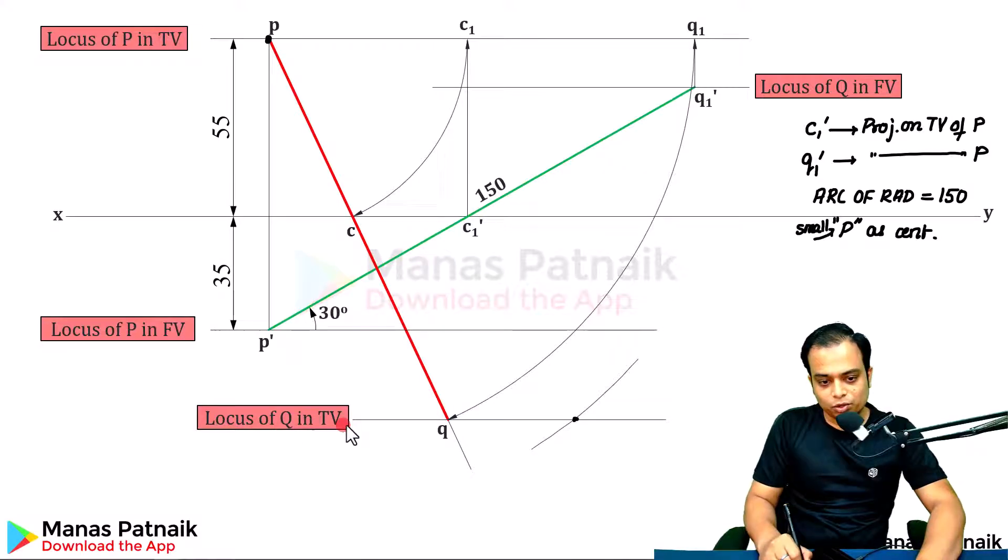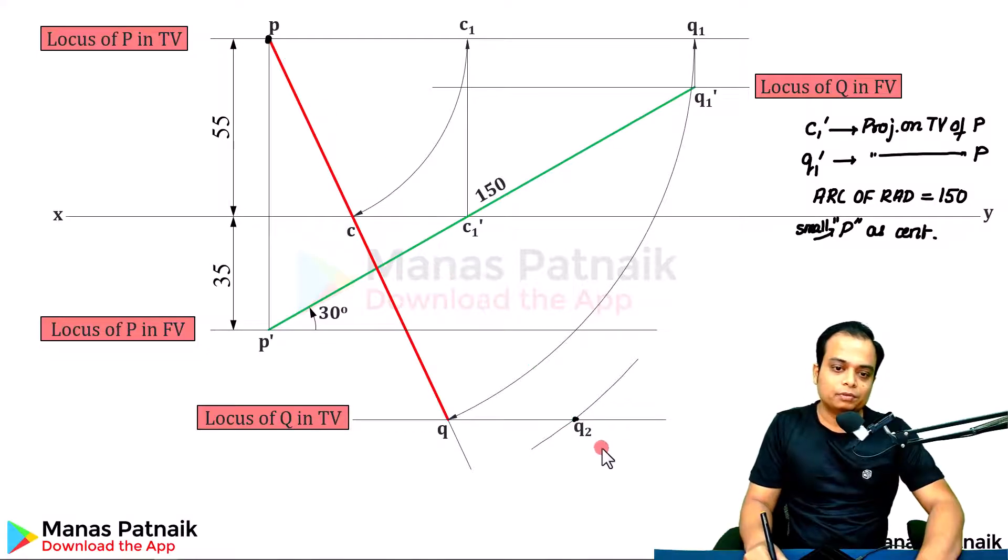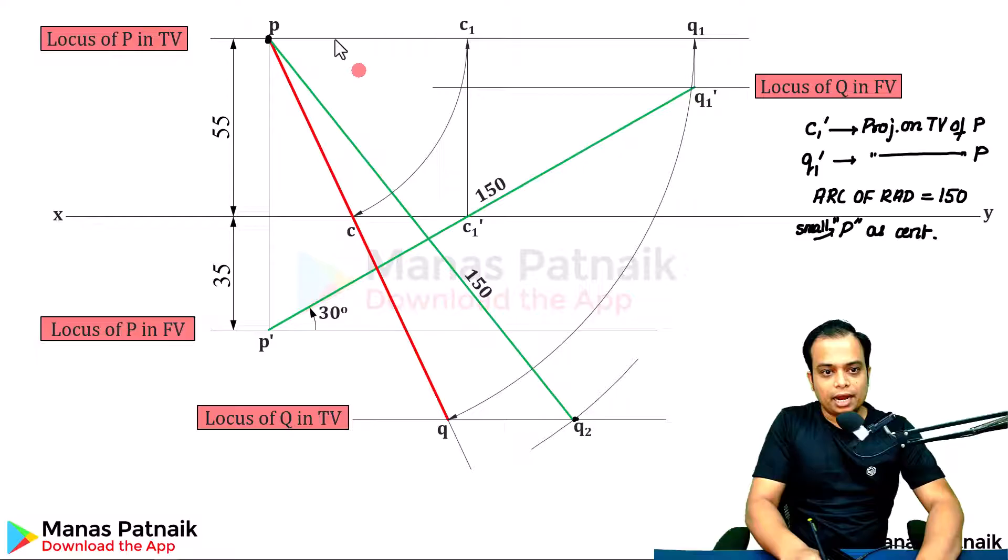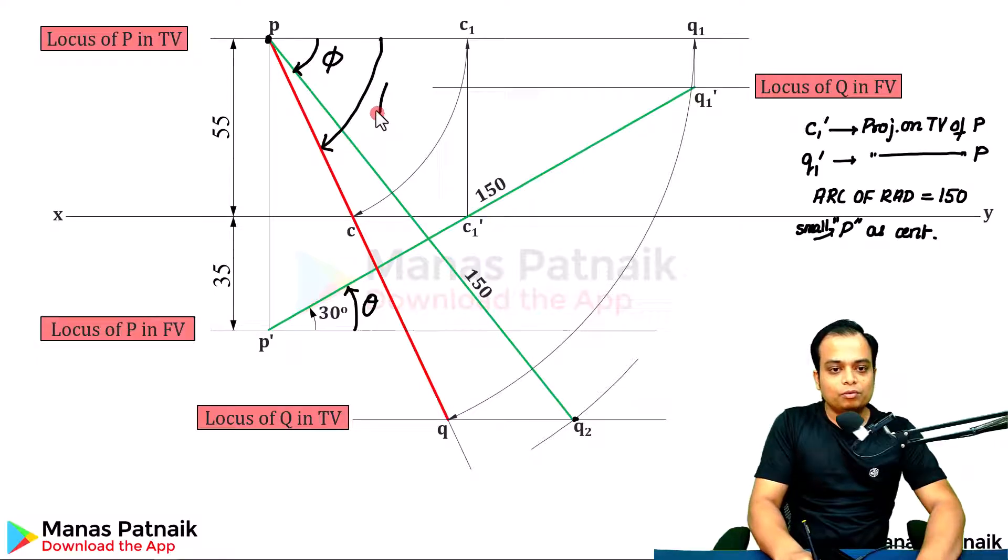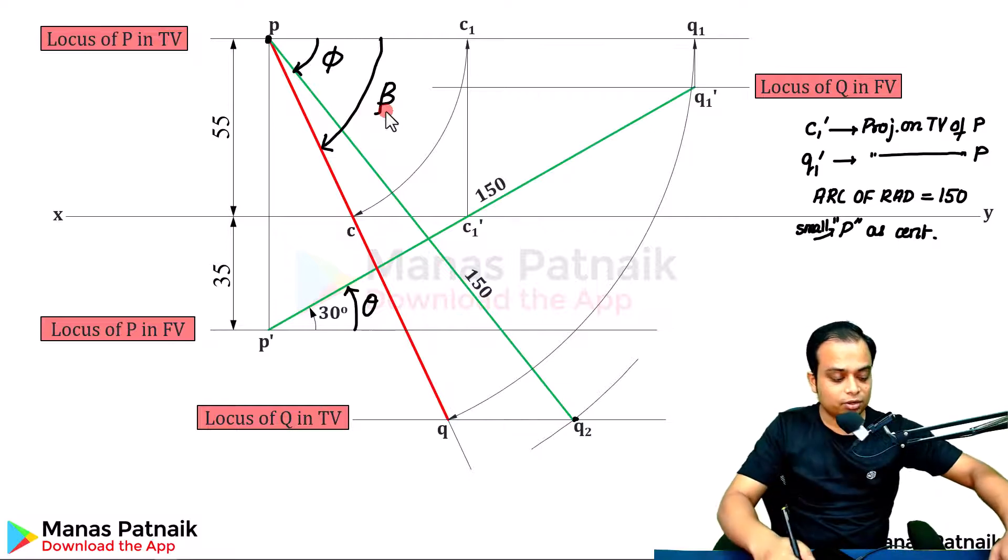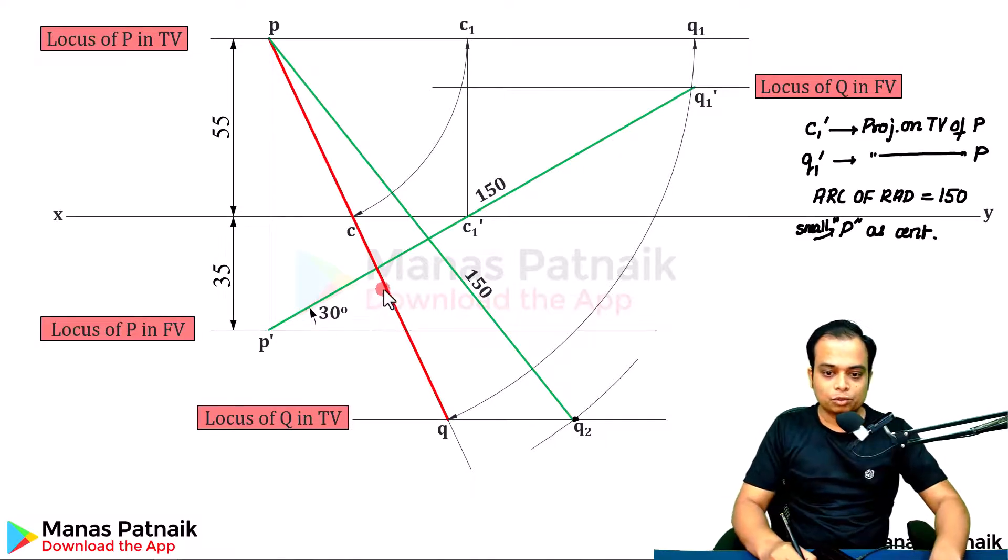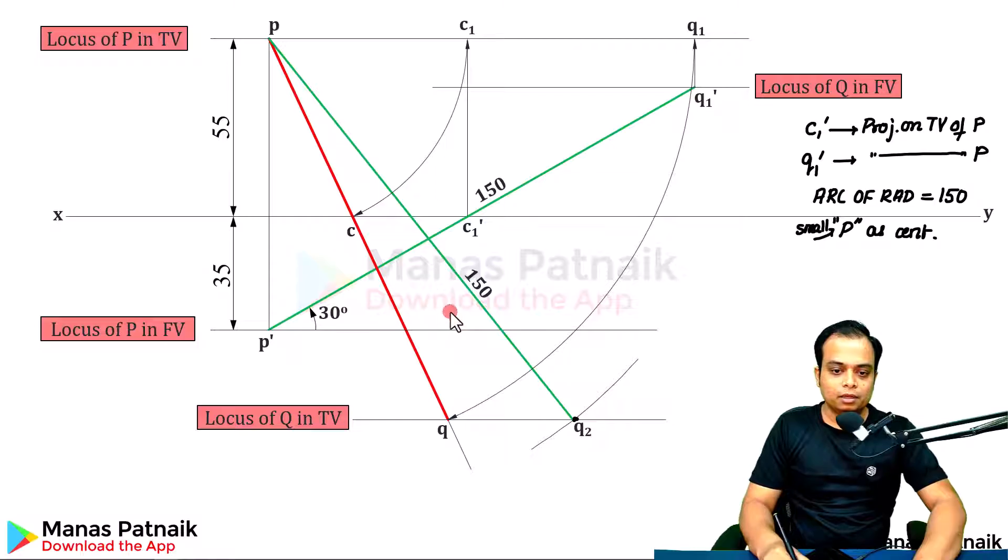Once again, this is Q2 for you. If someone asks, what is the angle, this angle is phi, this angle is theta, this is the final top view which is going to make angle beta. Alpha is left. We will work it out. There is a process that you have to follow always. I am even writing down these steps.